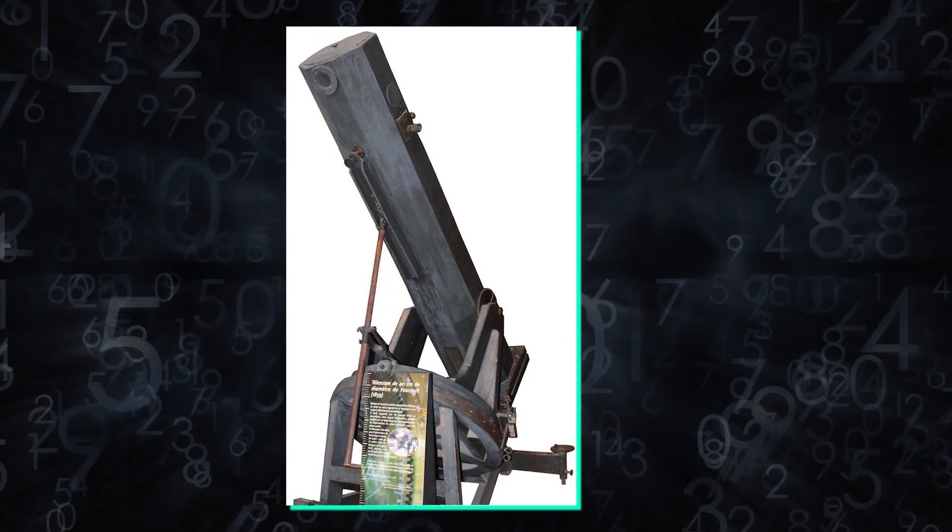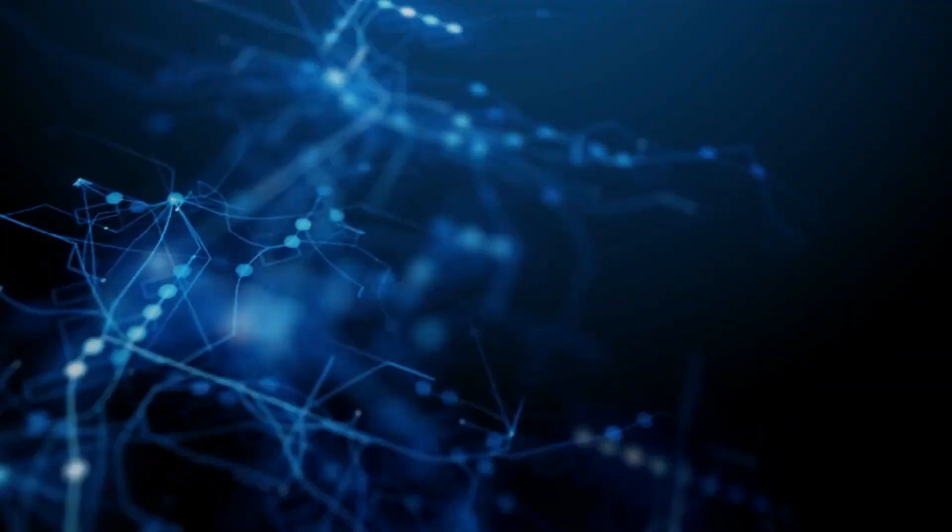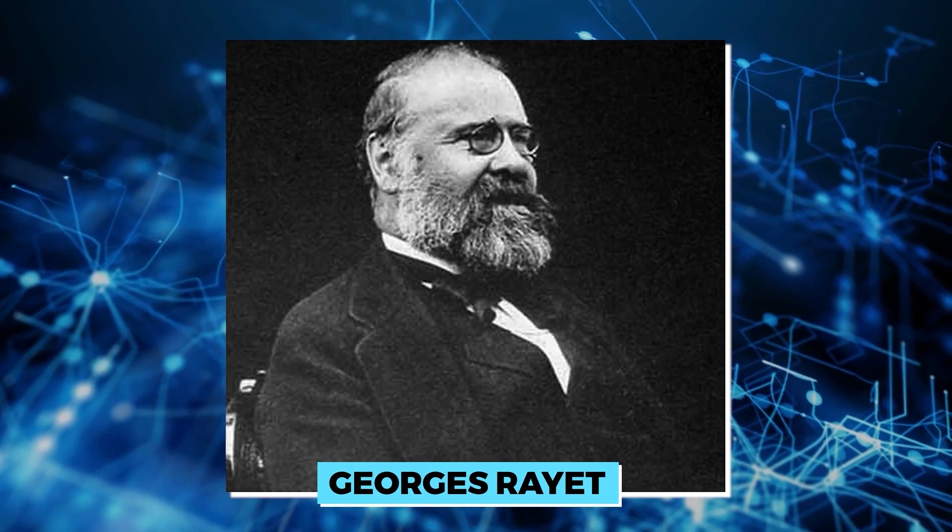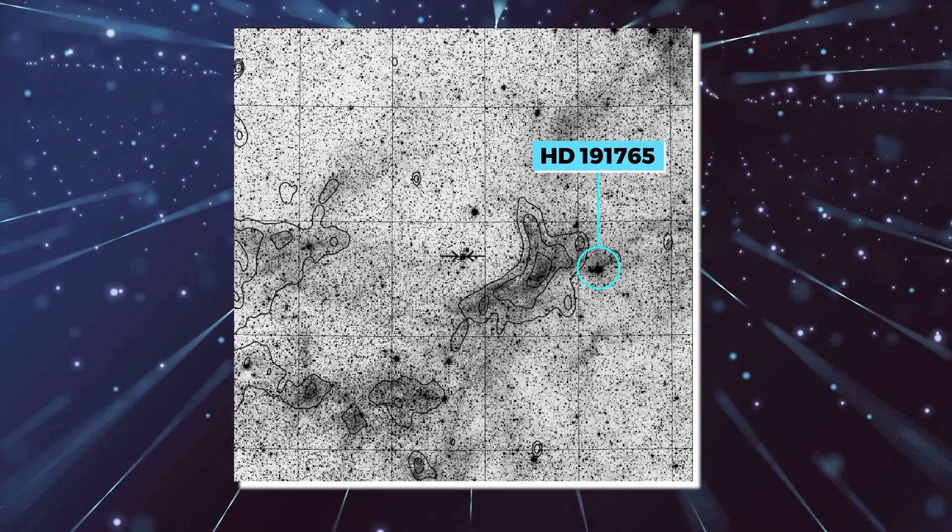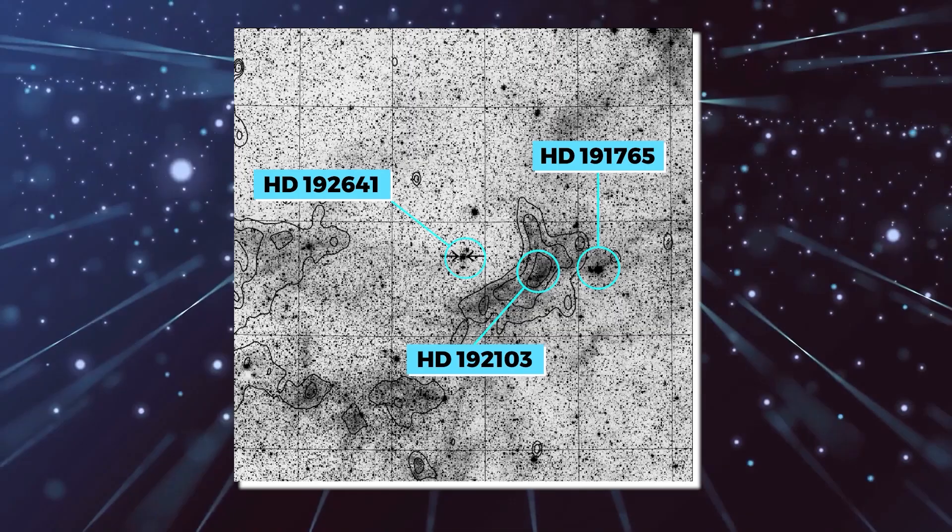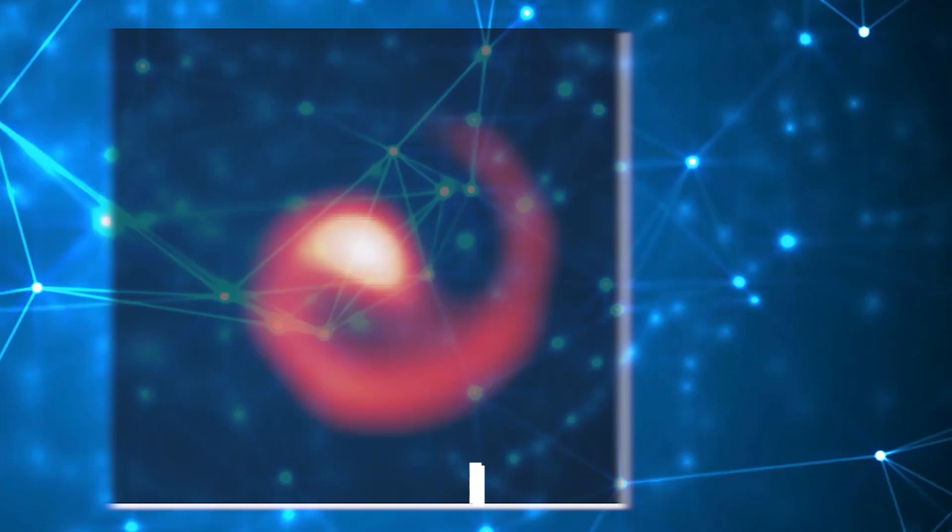In 1867, with the use of the 40-centimeter Foucault telescope established at the Paris Observatory, two astronomers, Charles Wolf and Georges Rayet, discovered three stars in the constellation Cygnus: HD 191765, HD 192103, and HD 192641, now renamed as WR-134, WR-135, and WR-137, respectively.